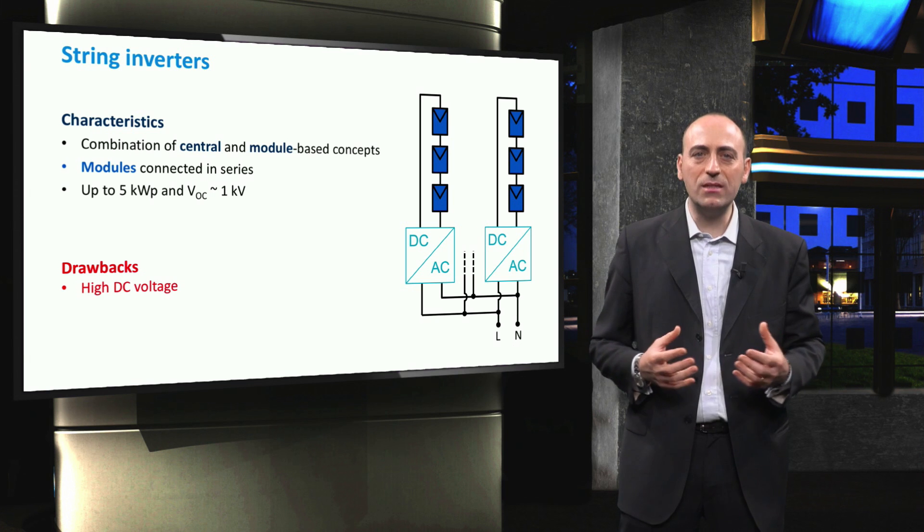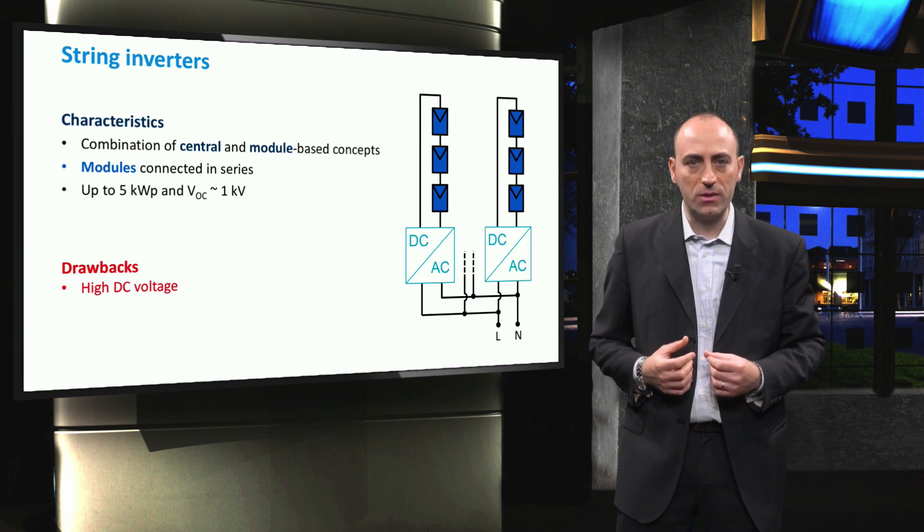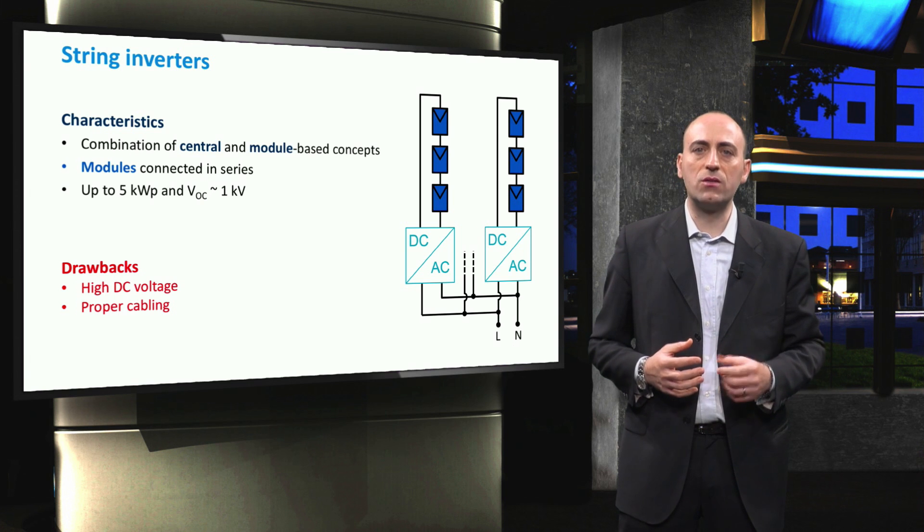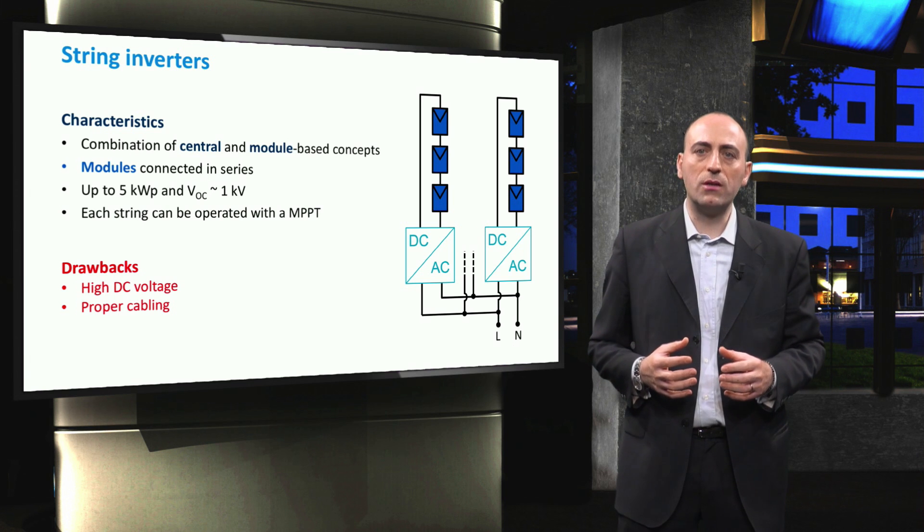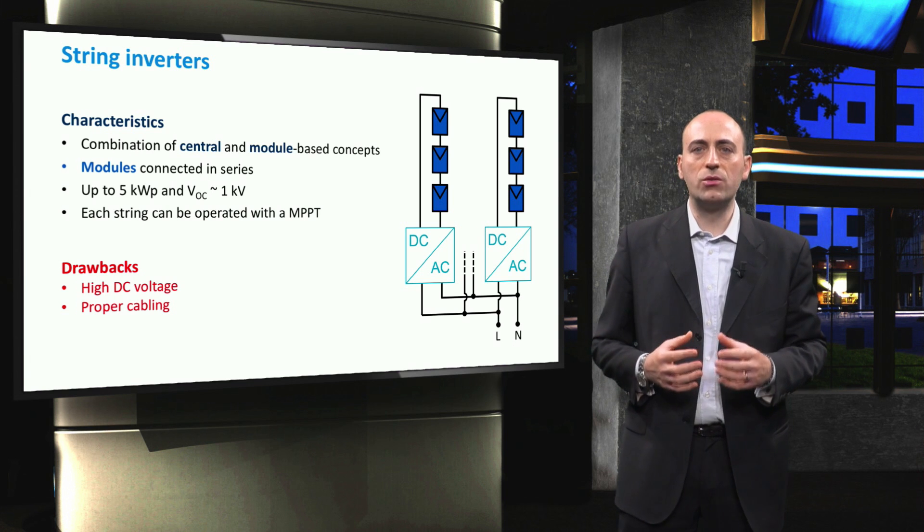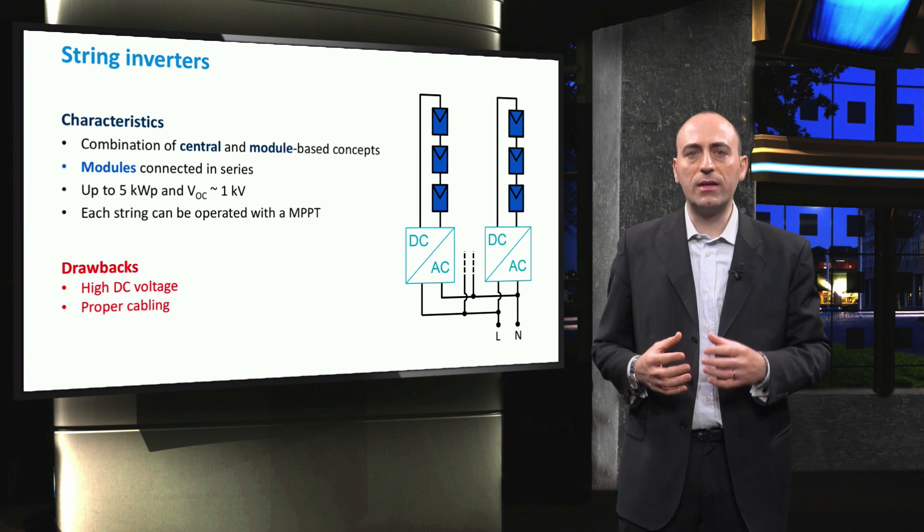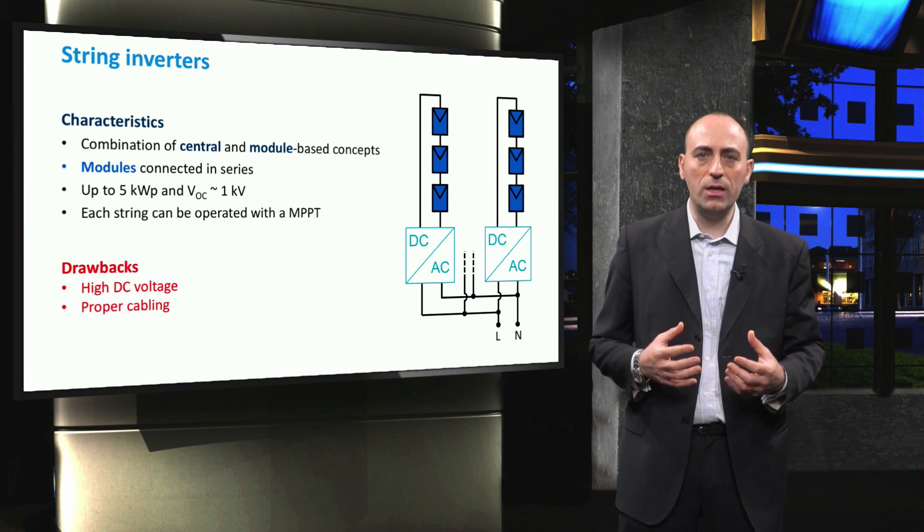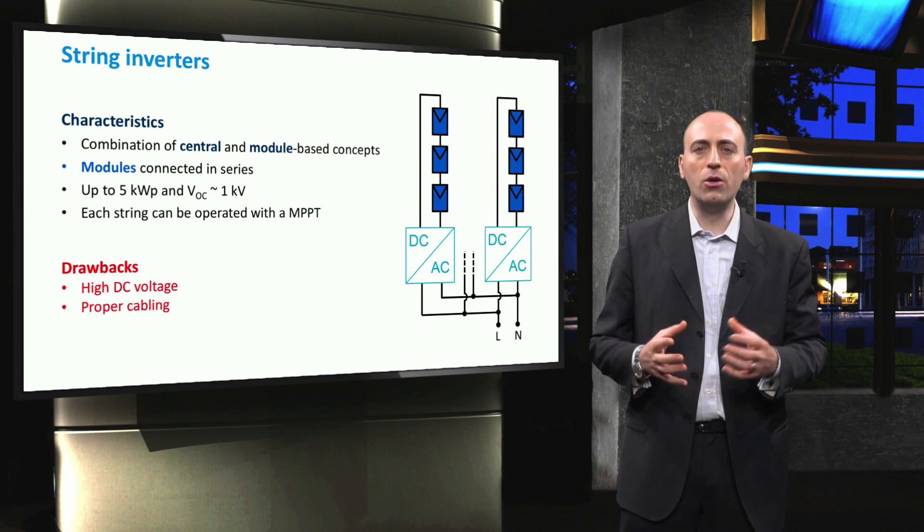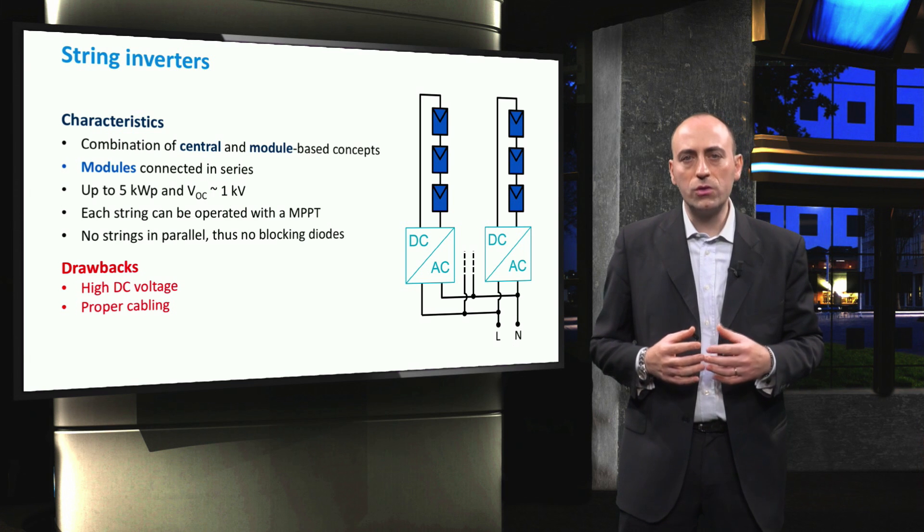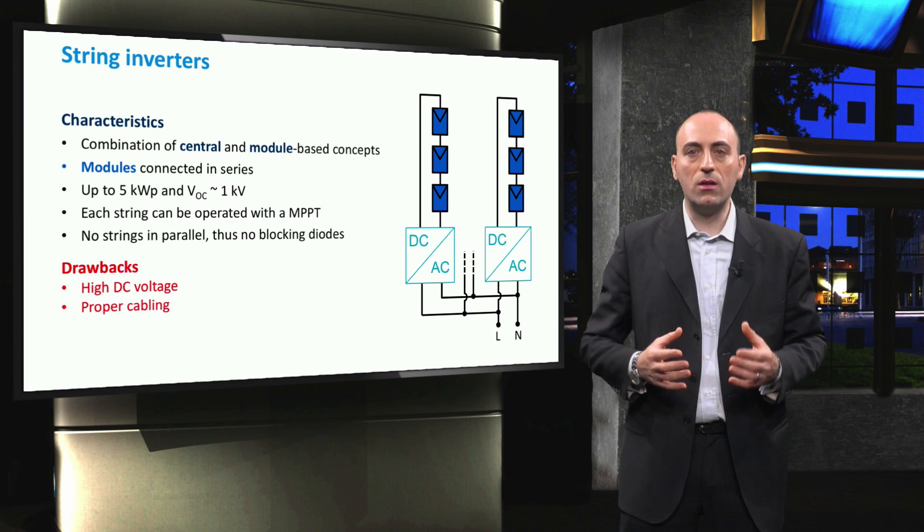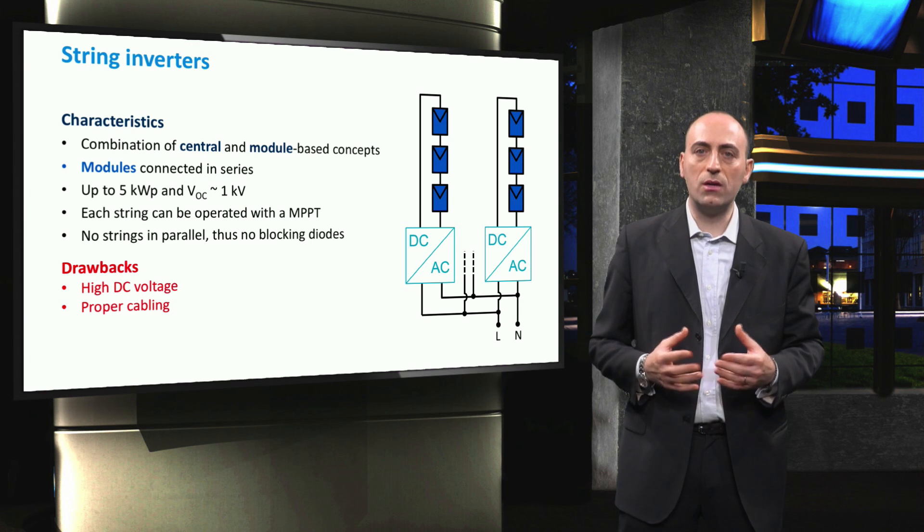The protection of the system also requires special consideration, with emphasis on proper DC cabling. Another important characteristic is that each string has its own MPP tracker, then each string can independently operate at its maximum power point. Thus, partial shading and hotspots will occur only on modules within the string. Also, because no strings are connected in parallel, there is no need for blocking diodes, as in the case of central inverters, and as a consequence, the losses associated with these diodes are eliminated.